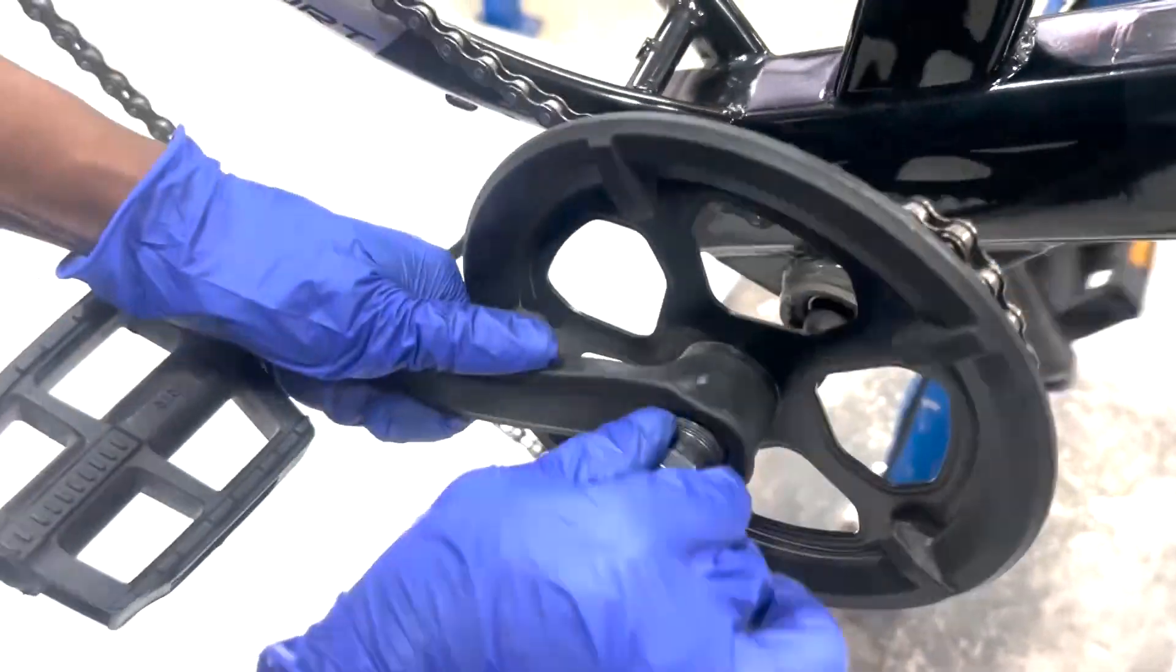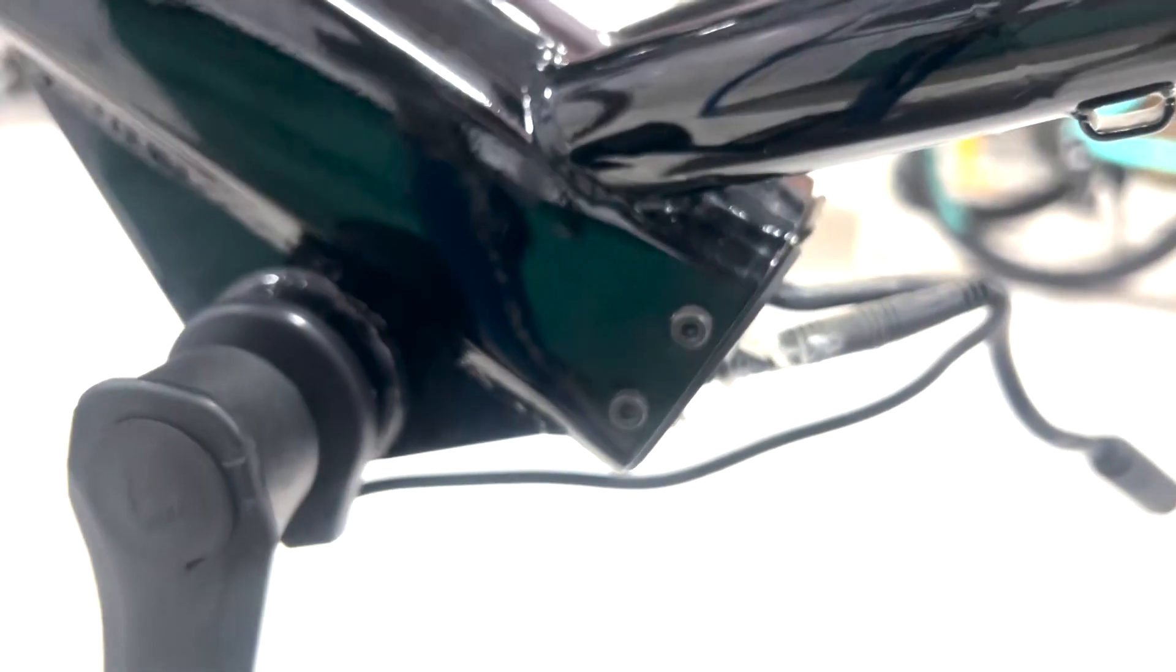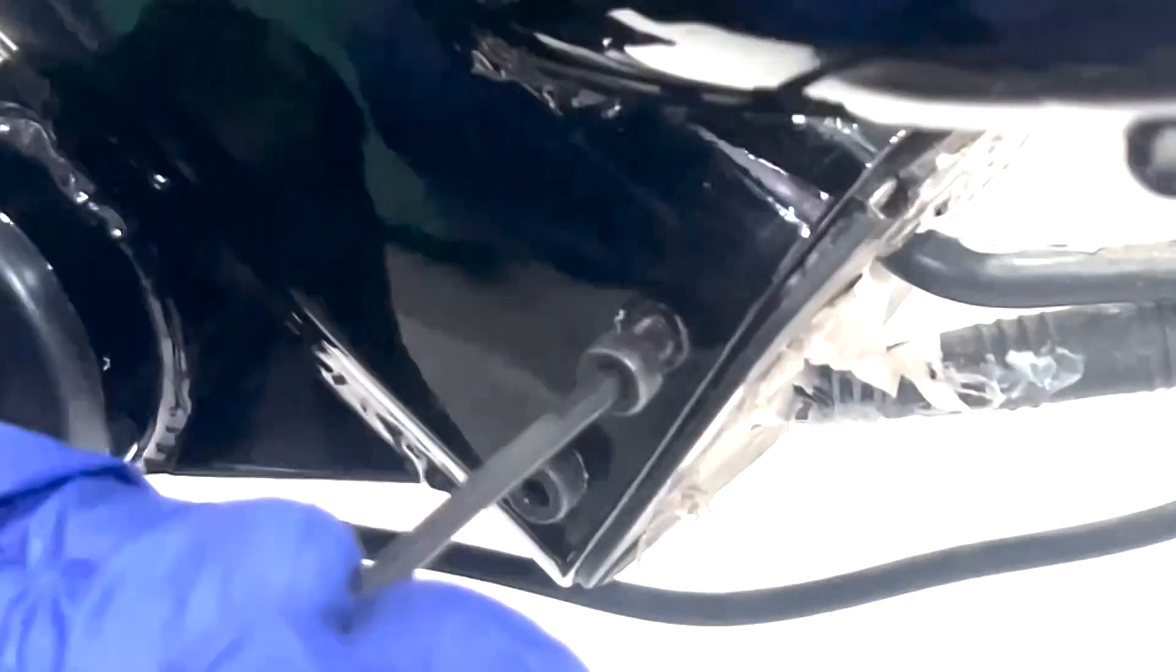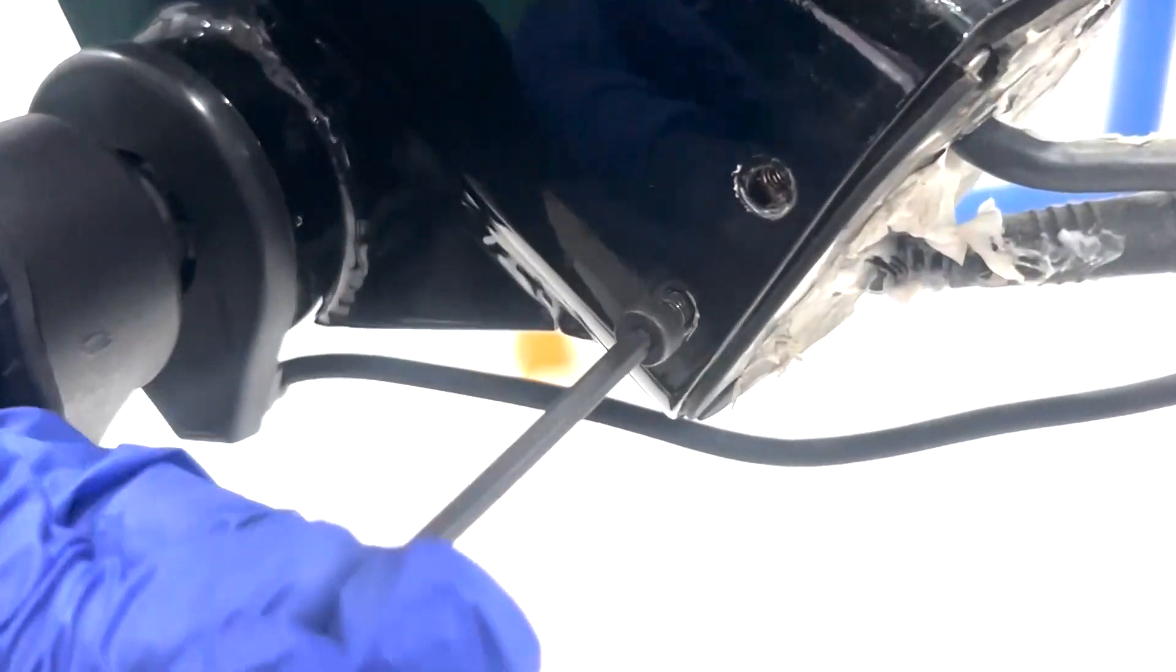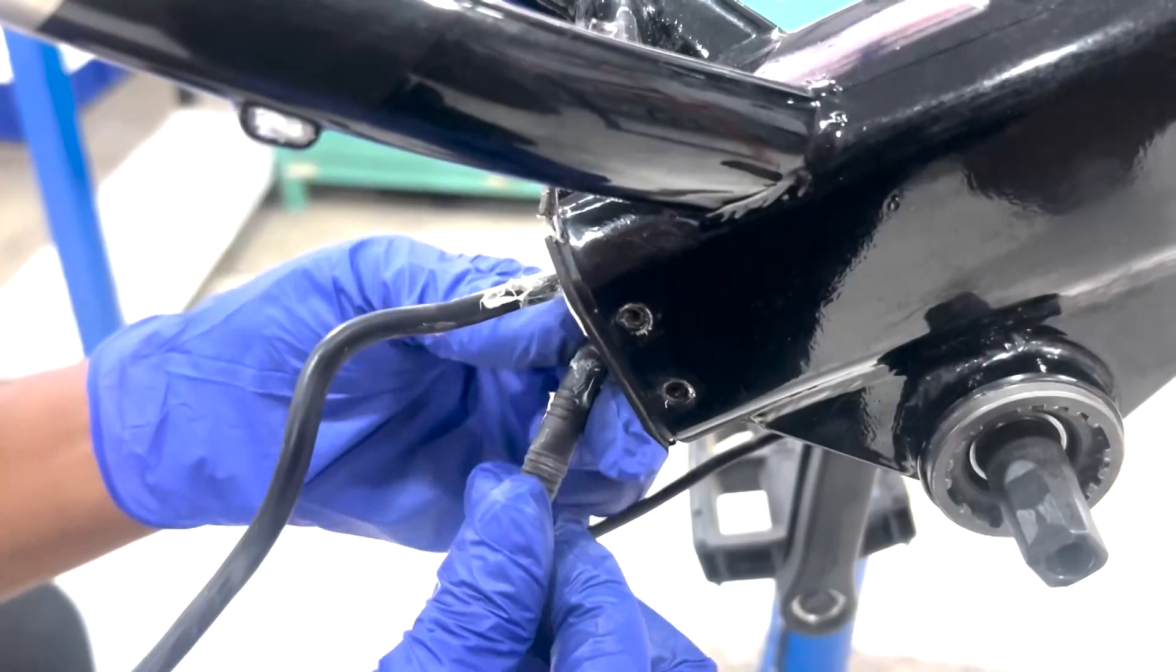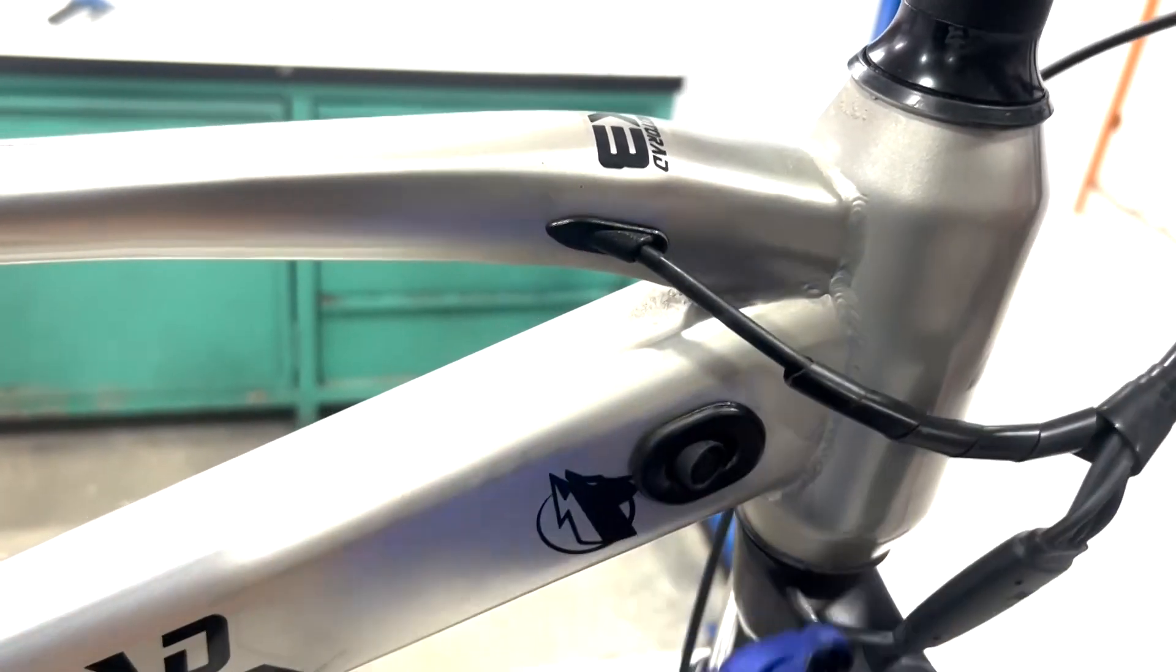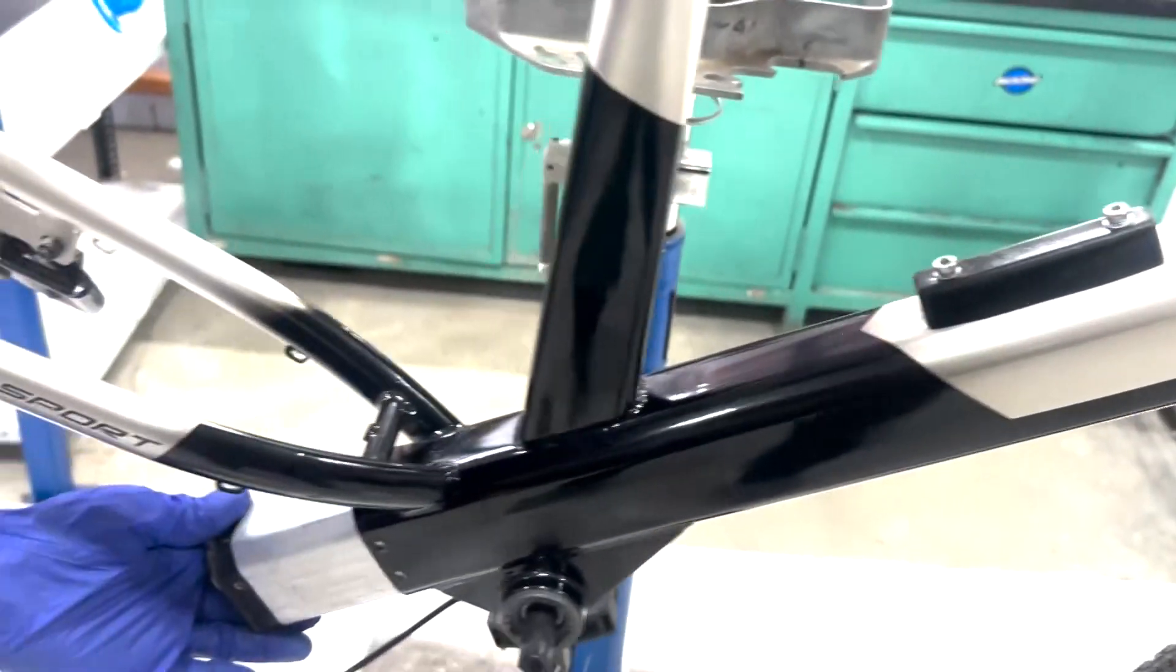With the crank removed, you'll have access to the controller mounting bolts. Use a 3mm Allen key to loosen and remove all four bolts. Before removing the controller, disconnect the PAS connector at the bottom and the 13-pin harness at the top of the down tube. Carefully slide the controller battery assembly out from the bottom of the down tube.